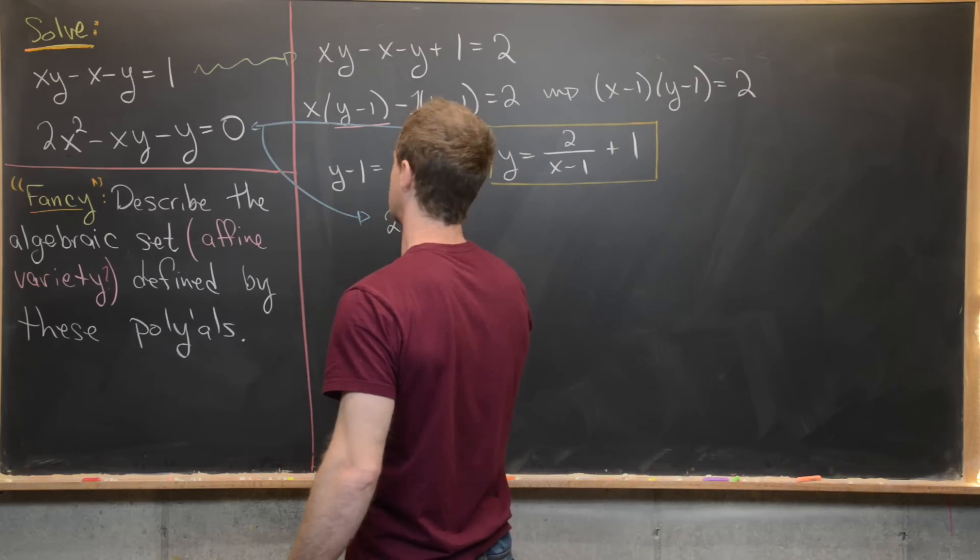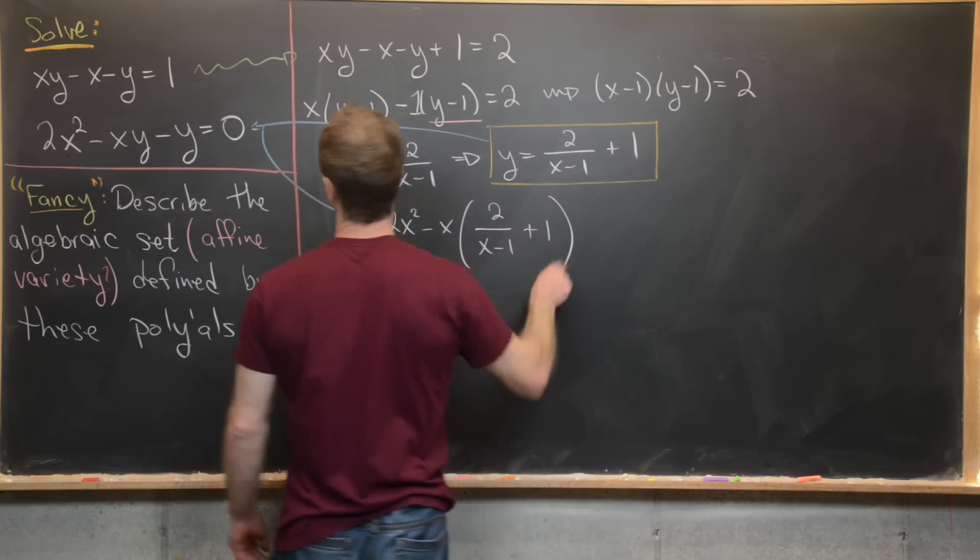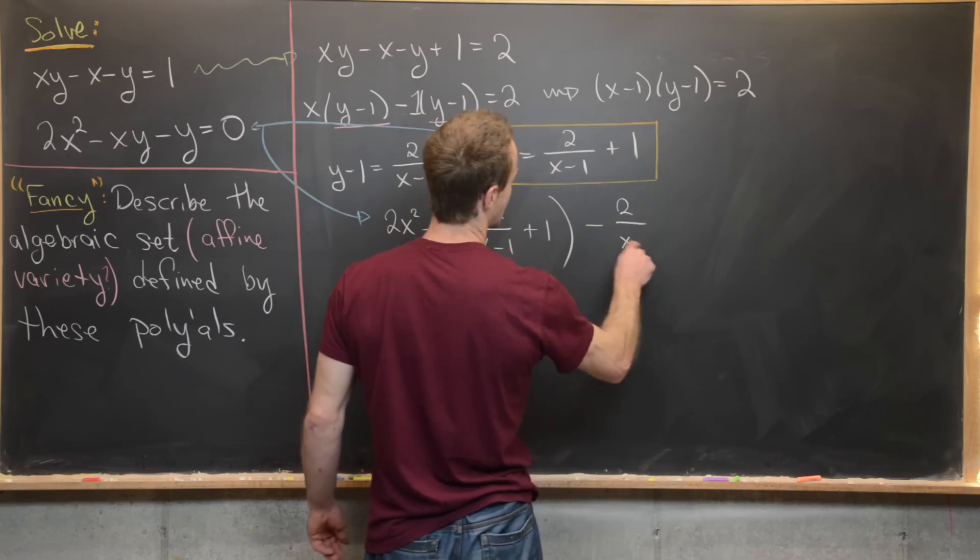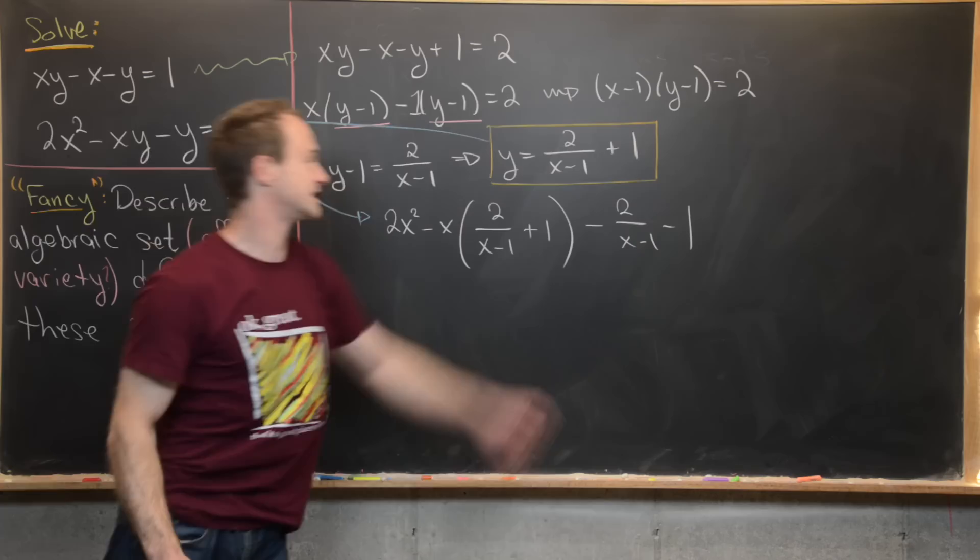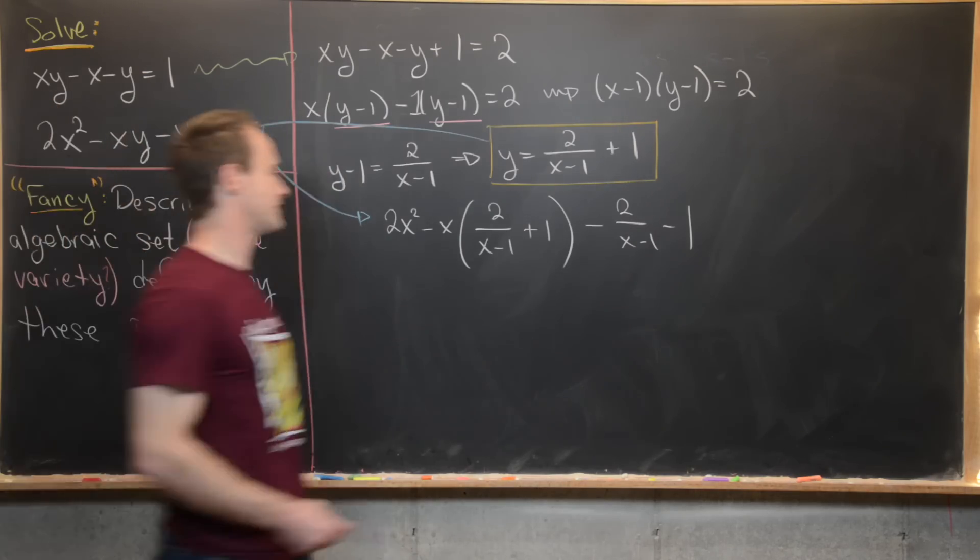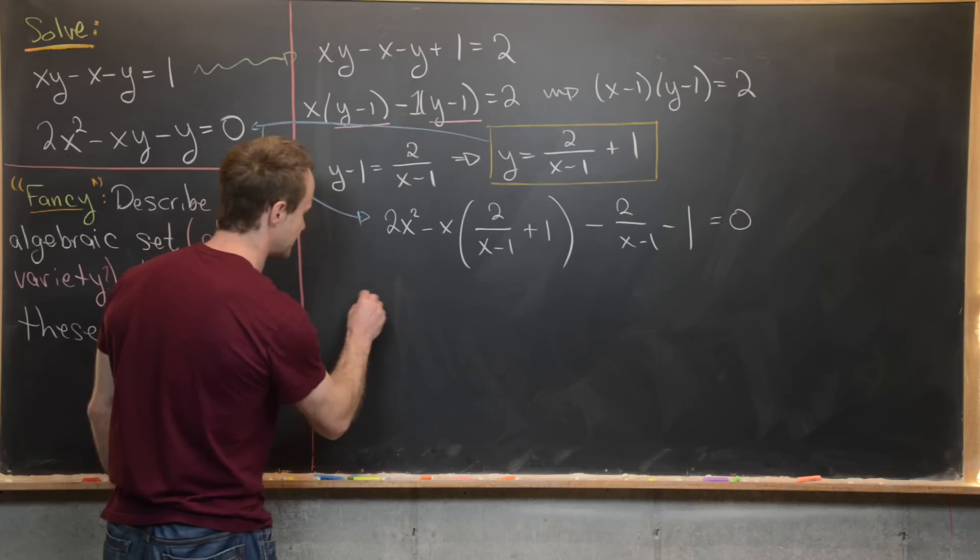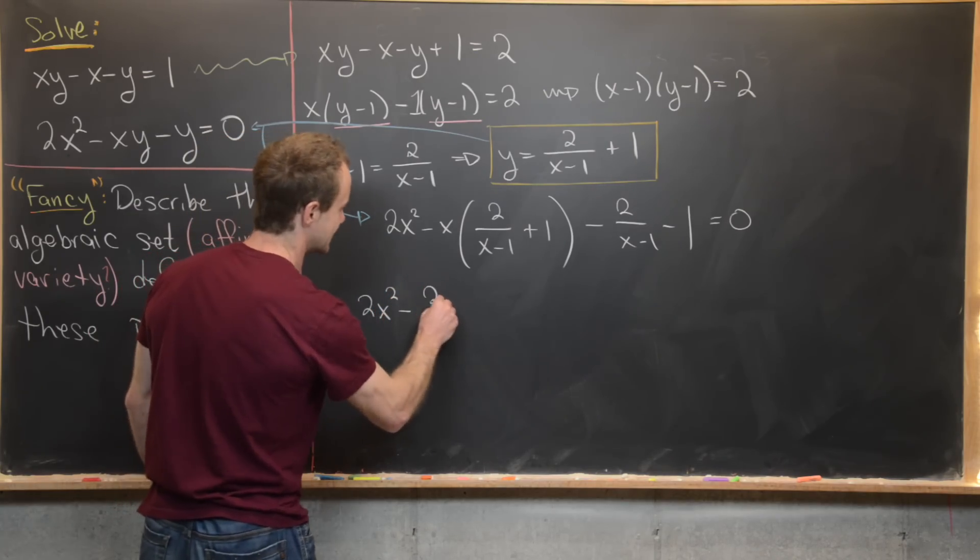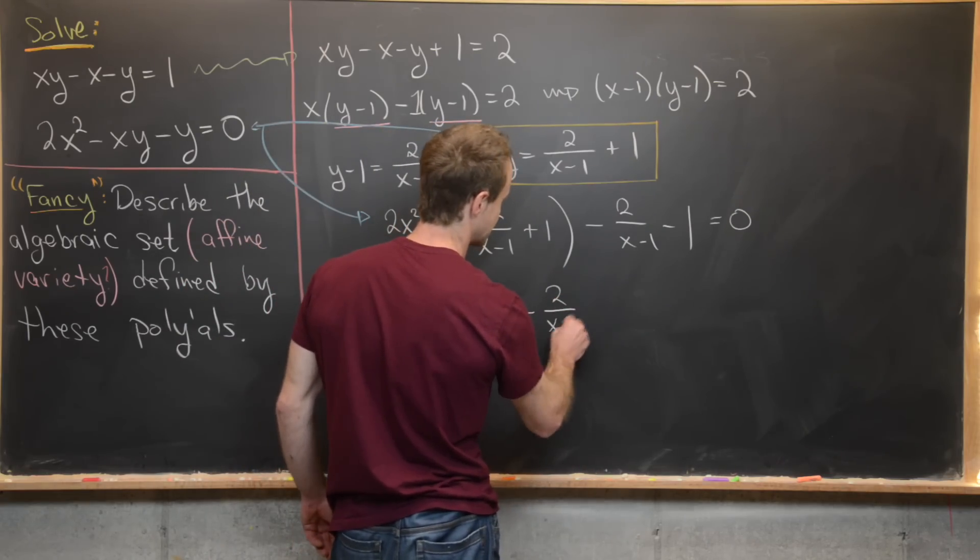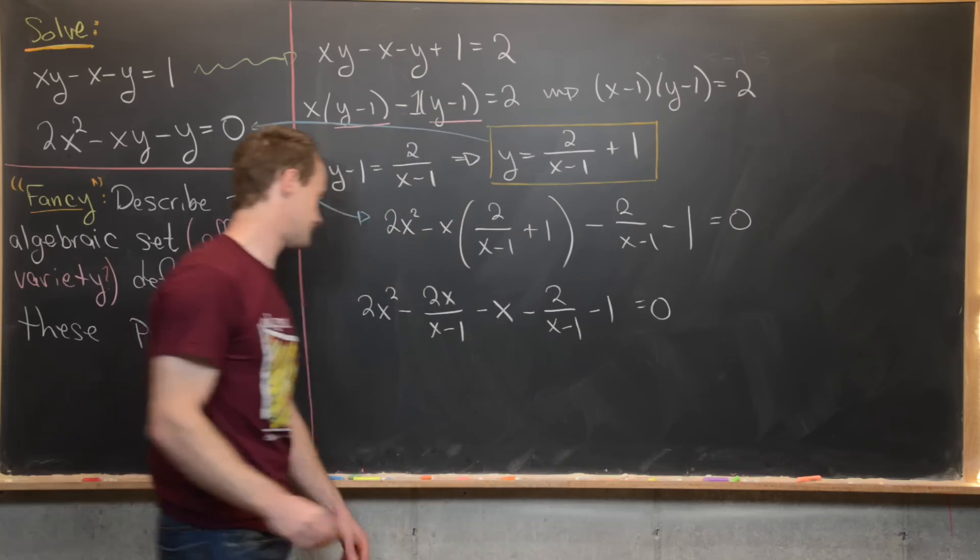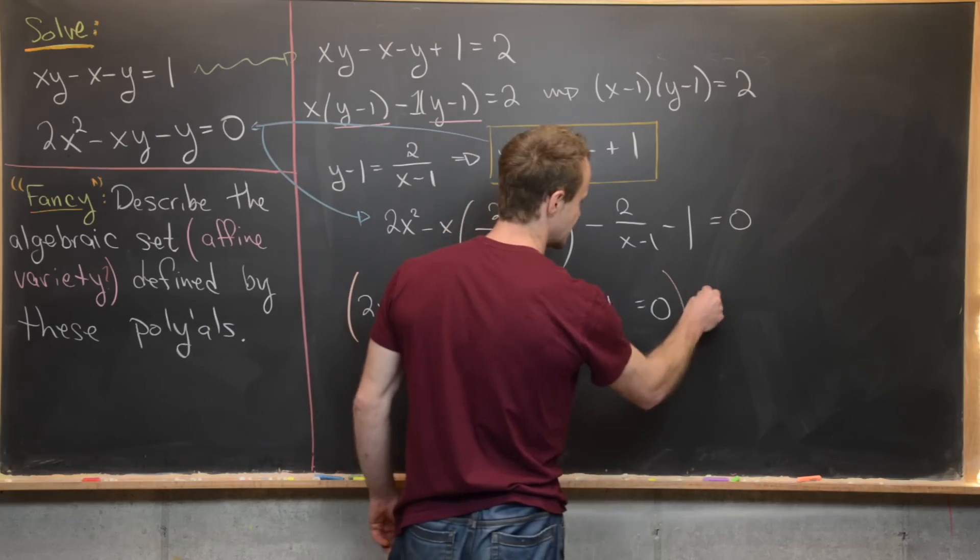Okay, so we've got 2x² - x(2/(x-1) + 1) and then minus 2/(x-1) minus one. So I'll just go ahead and distribute the minus sign across as we're subtracting y. And we have all of that is equal to zero. Okay, so now let's maybe multiply this out a little bit. That's going to give us 2x² - 2x/(x-1) - x - 2/(x-1) - 1 = 0.